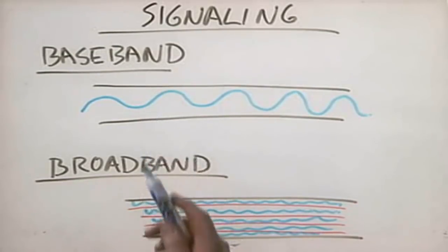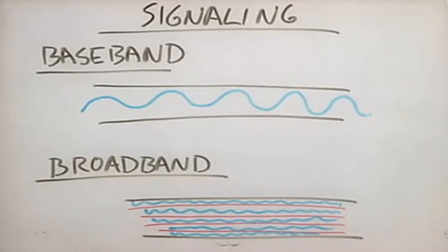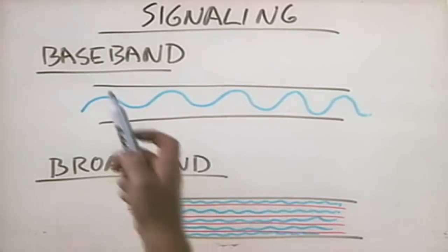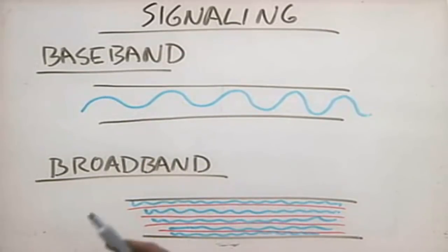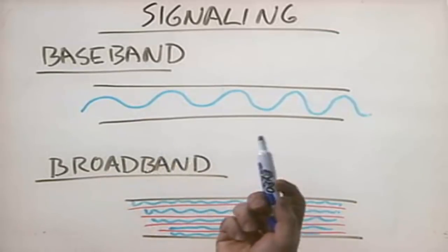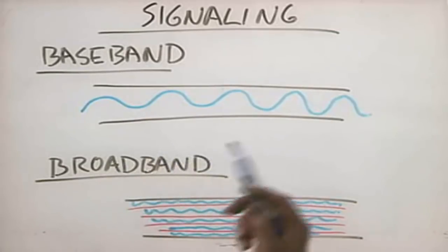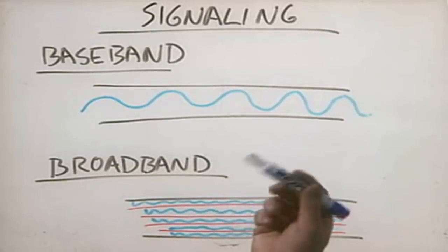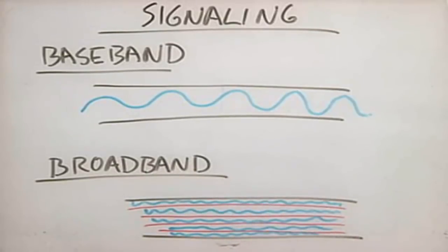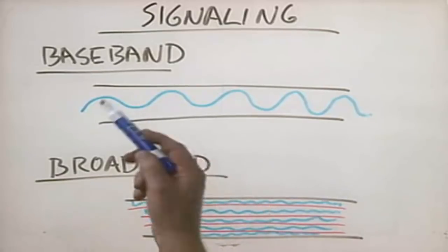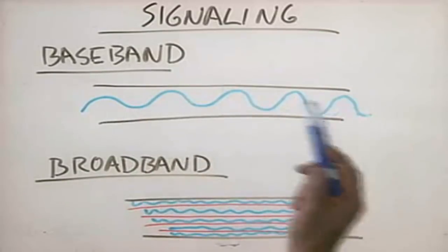Baseband signaling — in the old days I used to use the example of a telephone. Now, telephone systems are starting to use broadband signaling to allow you to have DSL and telephone conversations at the same time. But in the old days, telephones used baseband signaling. You picked up the phone and made a call, and while you were using the phone, someone else on a different extension in the same house couldn't make a call at the same time, because you could only have one signal on the wire at a time. Those are the two different types of signaling.